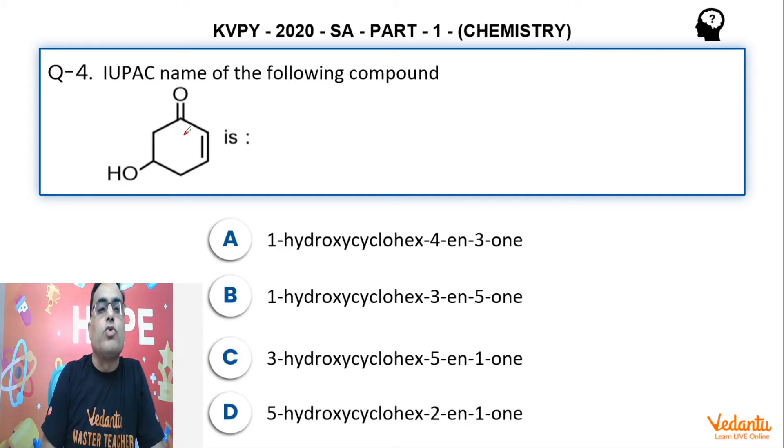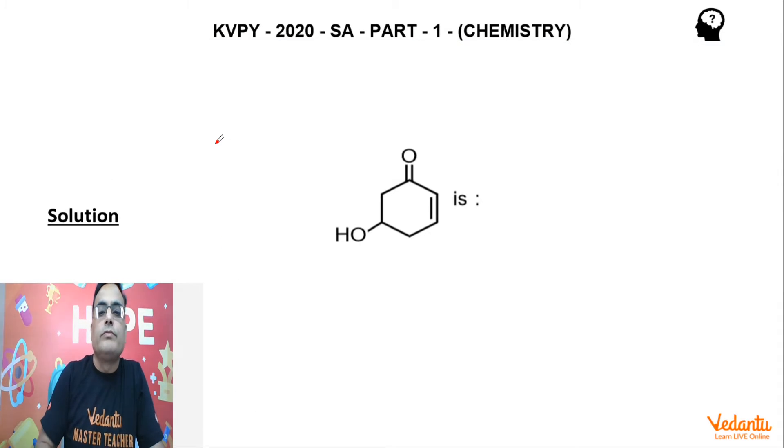it is a ketone. I mean ketone is the highest priority group present in this molecule and then hydroxy is the prefix and double bond is also present. So let us solve. You have to start numbering from here, then you will go through this side,